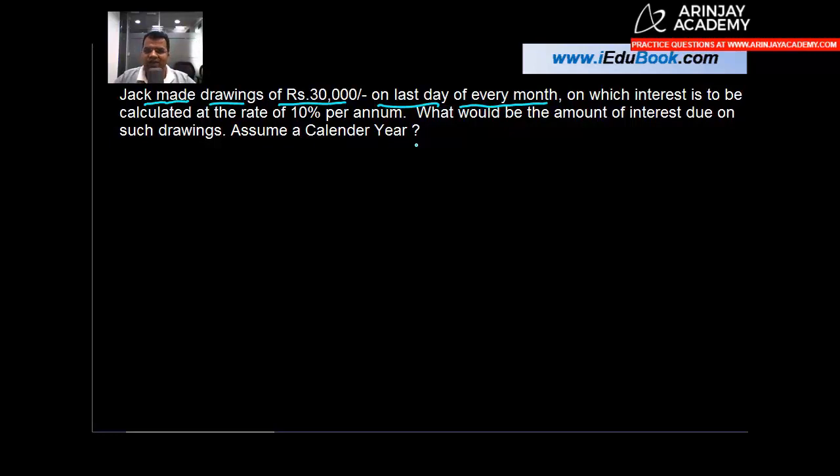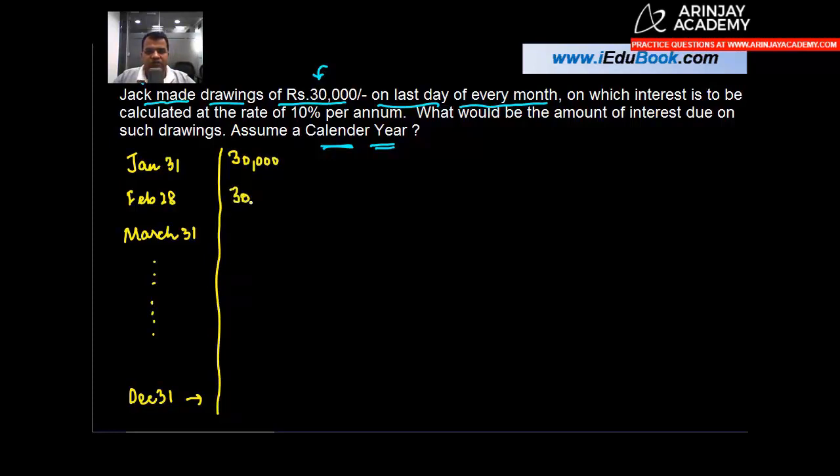What would be the amount of interest due on such drawings? Assume a calendar year. So basically what is happening here is that there's a gentleman Jack who's making drawings of rupees 30,000 on the last day of every month. You're told you have to assume a calendar year. So effectively what you are told is let's say the first drawing is made on January 31, the second one on February 28, the third one on March 31 and so on until you reach the end of the year on December 31 when the drawings are made.